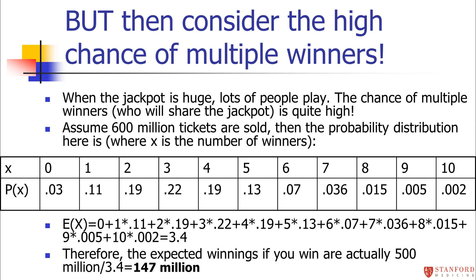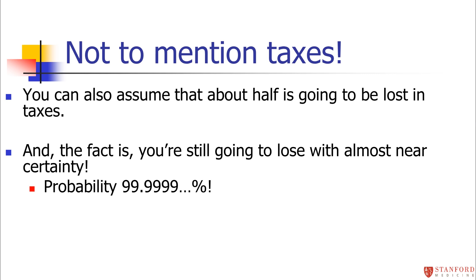That $147 million puts us below the $176 million needed for a positive expected value. When you factor in the chance of multiple winners, we're back into negative territory for expected value. And I haven't factored in taxes either — about half of lottery winnings get taken by federal and state governments, bringing the effective jackpot down to only about $75 million, which clearly keeps us in the negative range. So based on expected value, it wouldn't be worth playing. And regardless, you're still almost guaranteed to lose because the probability of losing is so high.